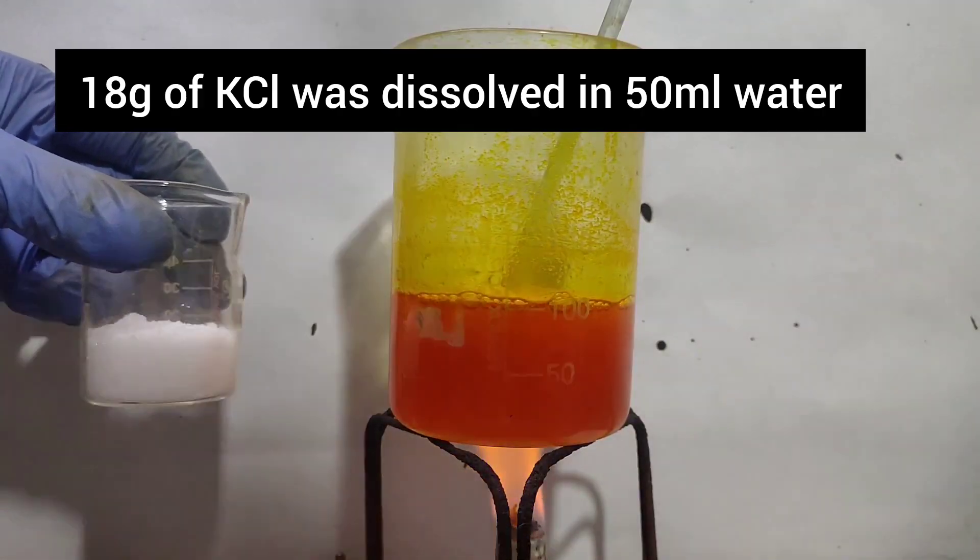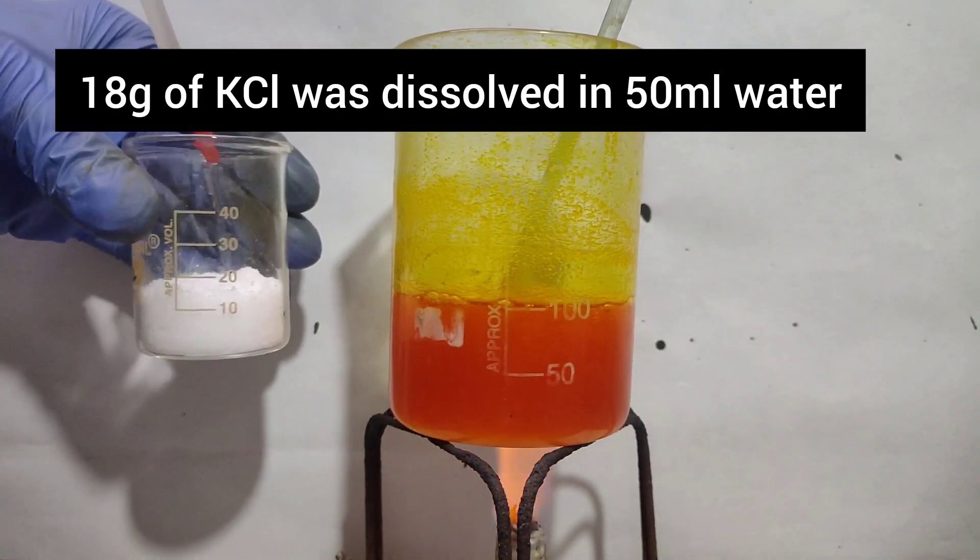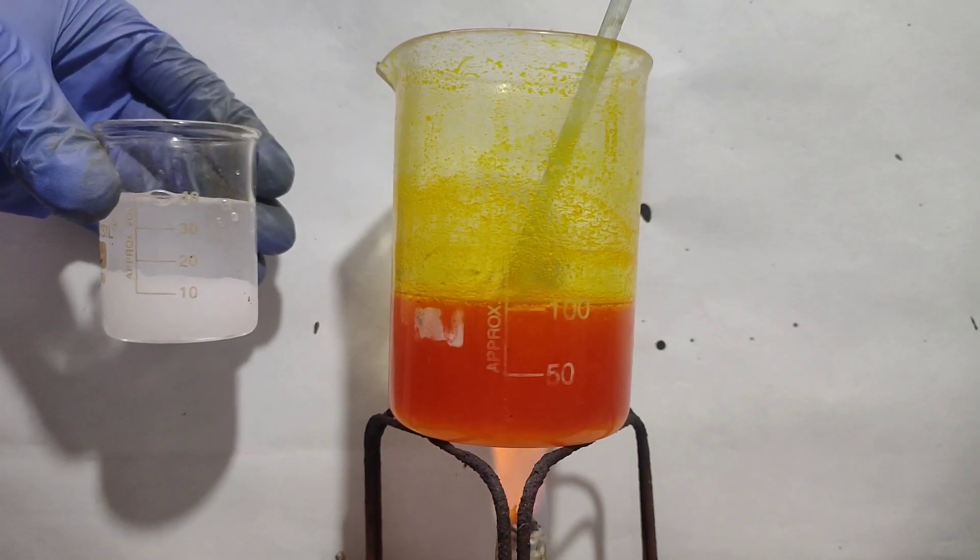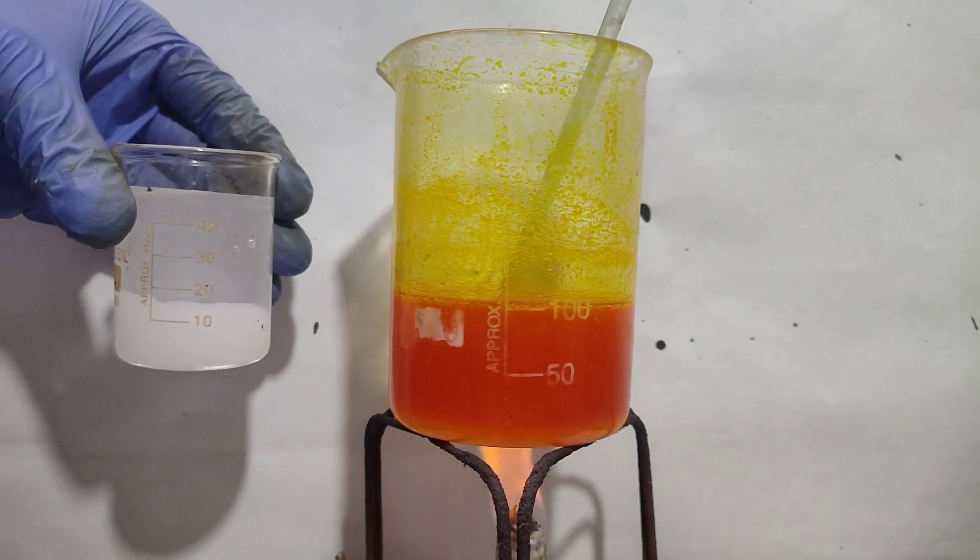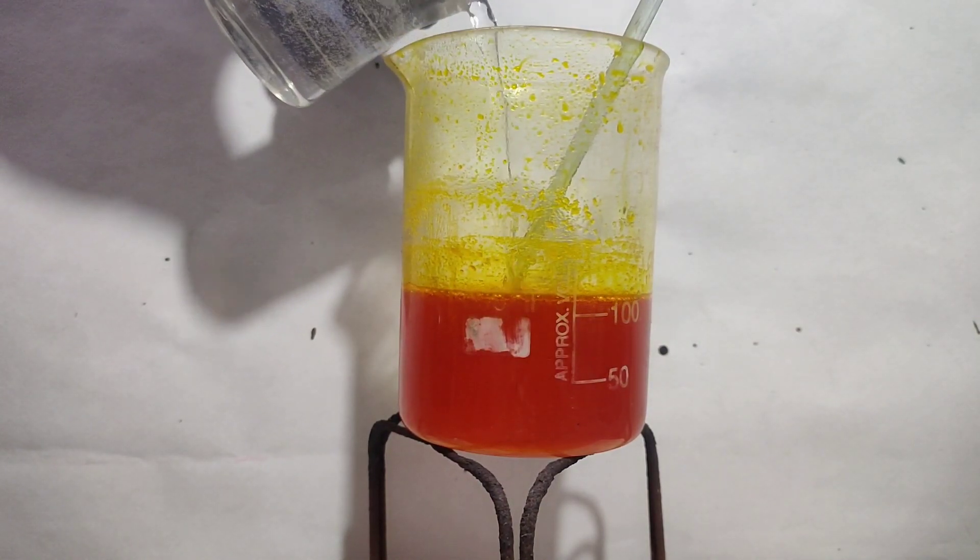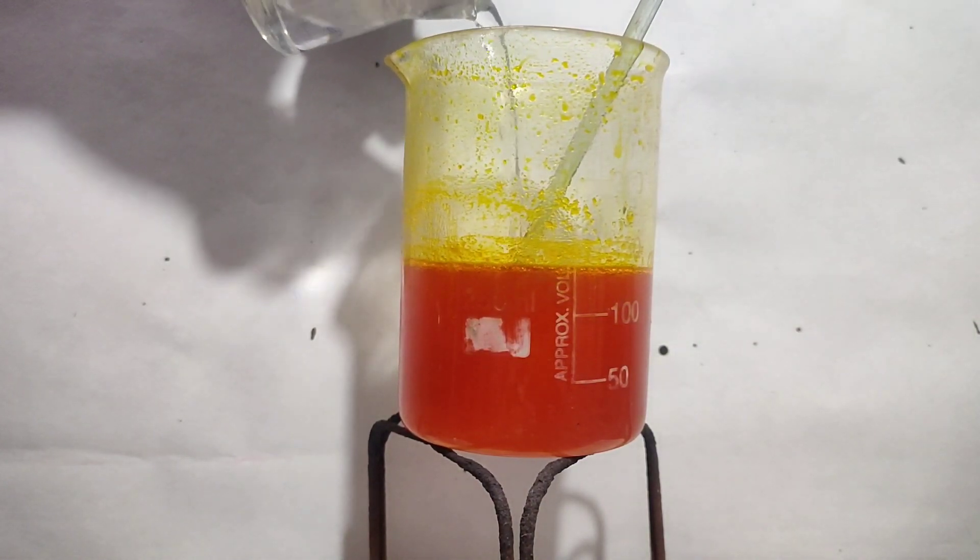I heated this solution so that all the solids would dissolve and simultaneously dissolved 18g of potassium chloride in 50 ml distilled water. After the solution was prepared, I added this solution into the sodium dichromate solution.